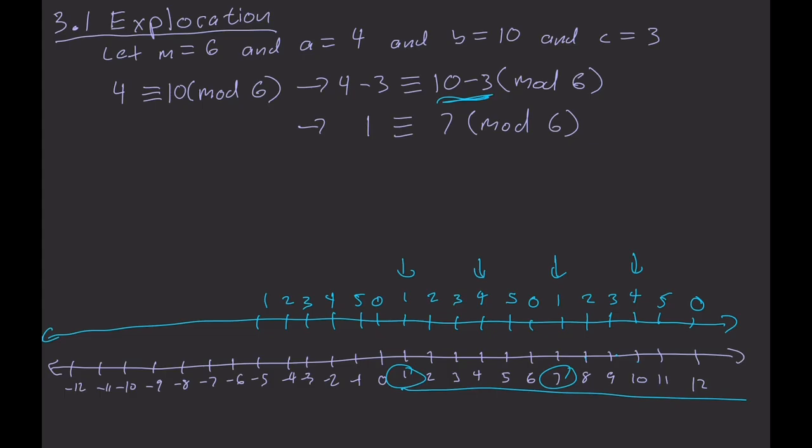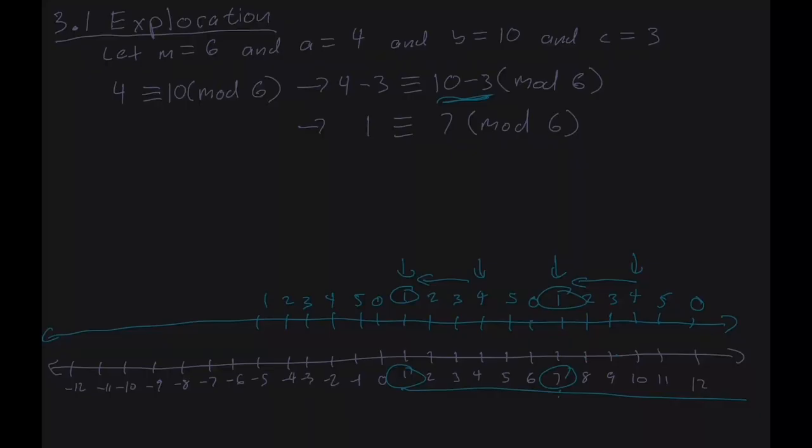You can either move the original number line 3 back and get to 7 and then figure out what that is modulo 6, or you can just go to our new number line and go back 3 and get to the 1. And that really is what people talk about with modular arithmetic, or also known as clock arithmetic.